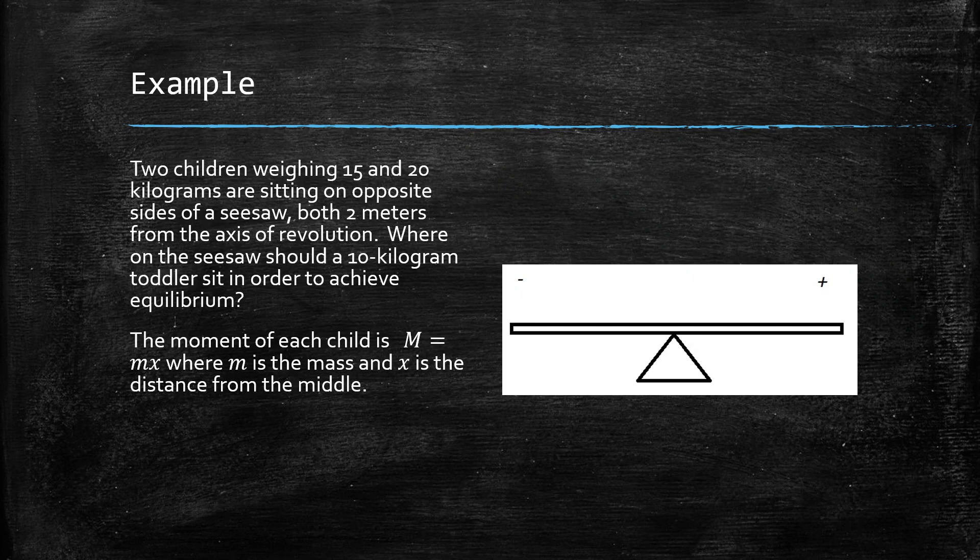The seesaw would be going downwards on the right-hand side, because since they are at equal distance from the axis of revolution, the center, and the one on the right weighs more, that would be pushing the seesaw down further. We want to place a 10 kilogram toddler on the seesaw. Where would we place the 10 kilogram toddler in order to achieve equilibrium — meaning the seesaw will be balanced and suspended in the air?